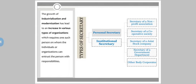Secretary is divided into two categories. The very first one is personal secretary and the second one is institutional secretary. In institutional secretary, it is further classified as secretary of non-profit association, secretary of cooperative society, secretary of a joint stock company, secretary of a government department, and other body corporates. Each of these we are going to study in detail, though each form of organization is explained in chapter number two. For now, I am going to give you a short detail about each of these organizations.